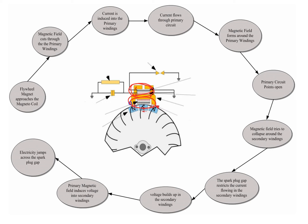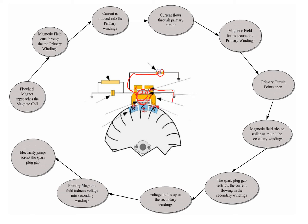The magnetic field around the primary windings tries to collapse into the secondary windings and into the secondary circuit, but it can't — because there is a gap in the spark plug. So the magnetic field tries to collapse and voltage builds up at the spark plug until there's enough voltage or pressure to jump across the spark plug gap. Then current flows to ground through the secondary circuit momentarily. That spark happens at exactly the right time because of the flywheel key that attaches the crankshaft to the flywheel.